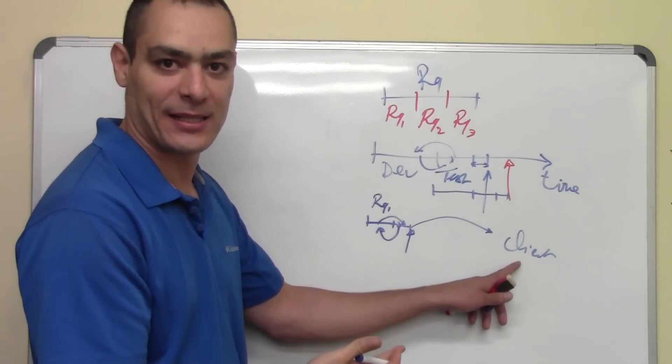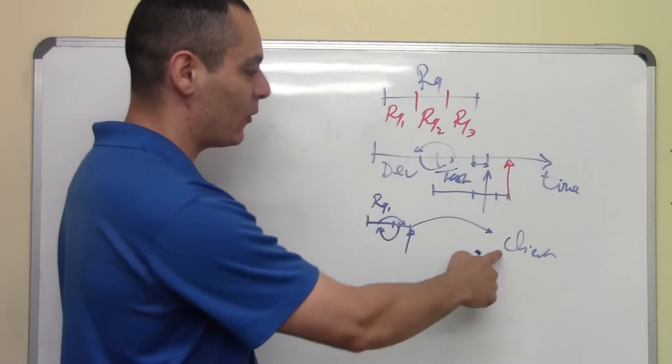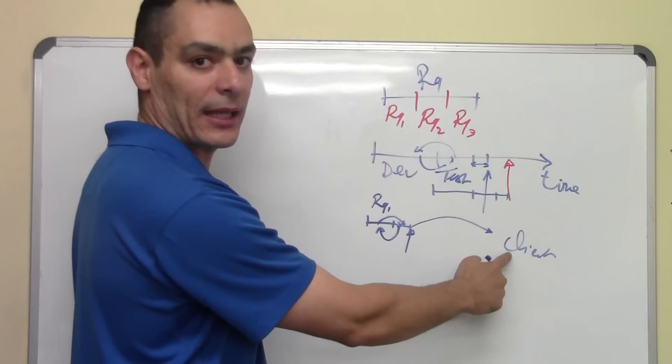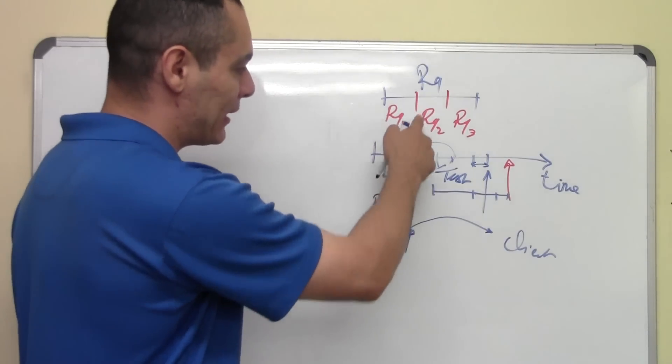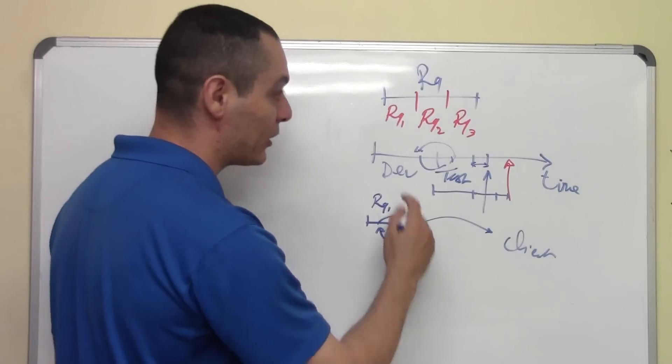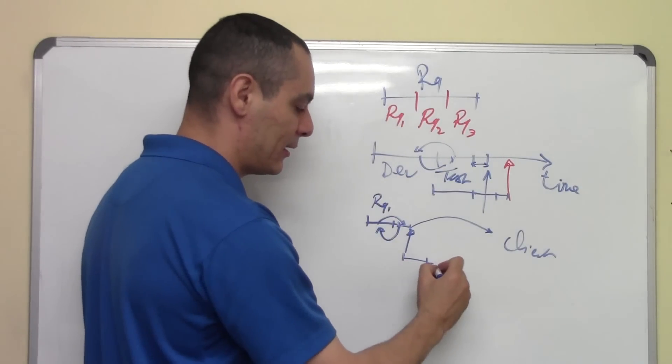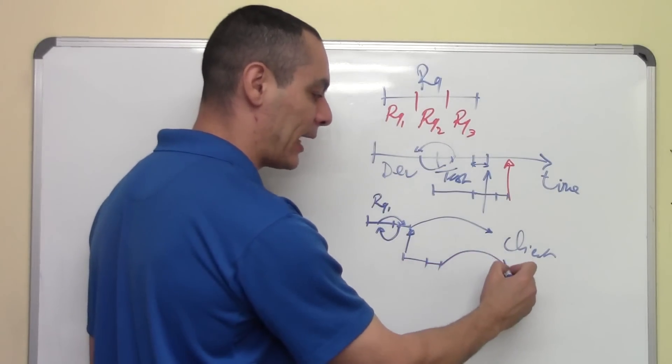Also, the client is happy because he has something. Instead of waiting all this time, he has something quickly that he can make money with. Now we take the second kind of requirements, we develop the product, test it, and deliver it again.